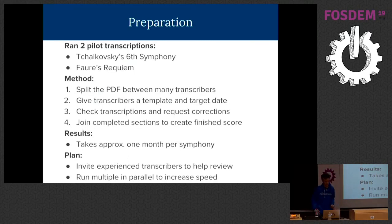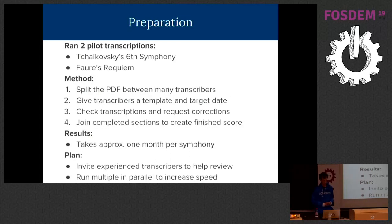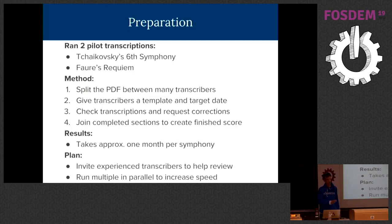We announced the project at FOSDEM 2017. At that point we had run one pilot transcription of Tchaikovsky's Sixth Symphony, and shortly afterwards we did another to transcribe Fauré's Requiem. The method was to take an IMSLP PDF, break it up into chunks of a few pages, send them out to MuseScore users who would transcribe them, then check them for accuracy against the original. If not accurate, we'd request improvements and send them back. Once all finished, we'd join them together to create a finished score.